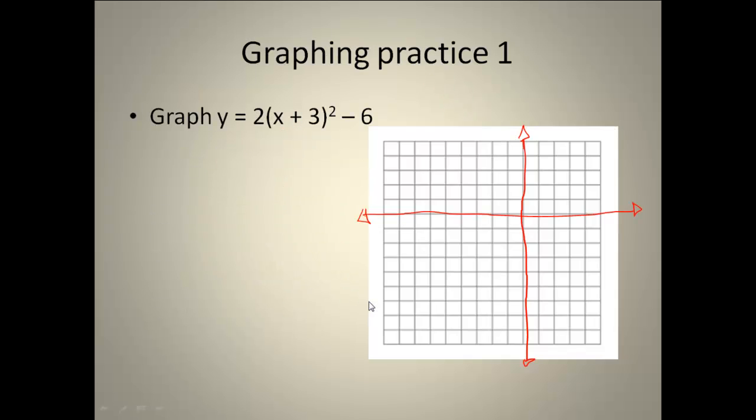We're going to go ahead and graph one that is in vertex form. First thing I start with, just like before, is finding my vertex. So as I look at my equation, I know I need to take the opposite of the h. So instead of a positive 3, I need the negative 3 and then my k value. So my vertex is at negative 3, negative 6.